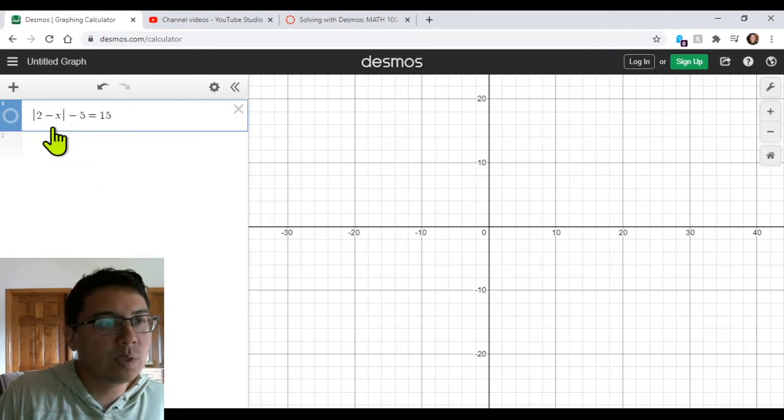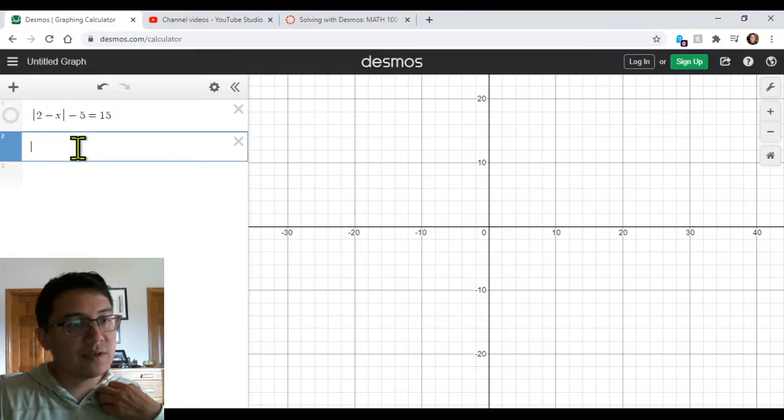This time around, we're going to be solving this absolute value equation. So we have the absolute value of 2 minus x minus 5 is equal to 15. The process for solving this will be the same as what we did in the previous video.